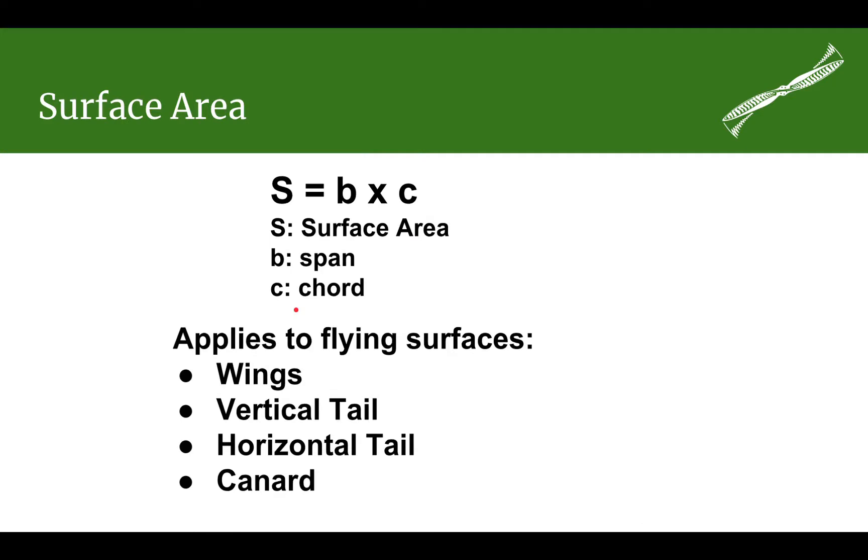Now that we have the span and chord defined, we can talk about the surface area. The surface area is very simply multiplying the span, which is represented by a lowercase b, by the chord. In this case, I'm using a lowercase c, sometimes an uppercase c. Simply multiply span times chord, that gives you the surface area.